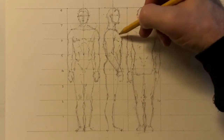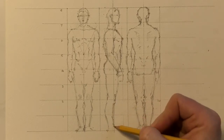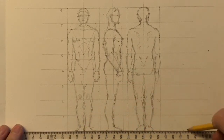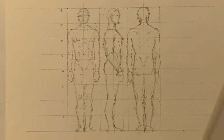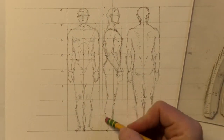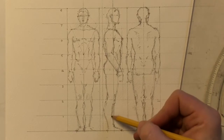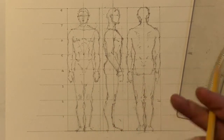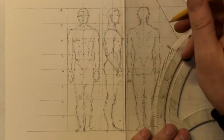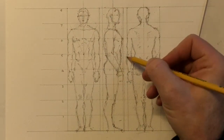Indicating some of the anatomy of the torso now, clarifying some of the basic anatomy. So now we're just about finished with our overall indication of the anatomy and basic proportions. We're going to go through a bit of a process of cleaning things up a little bit.